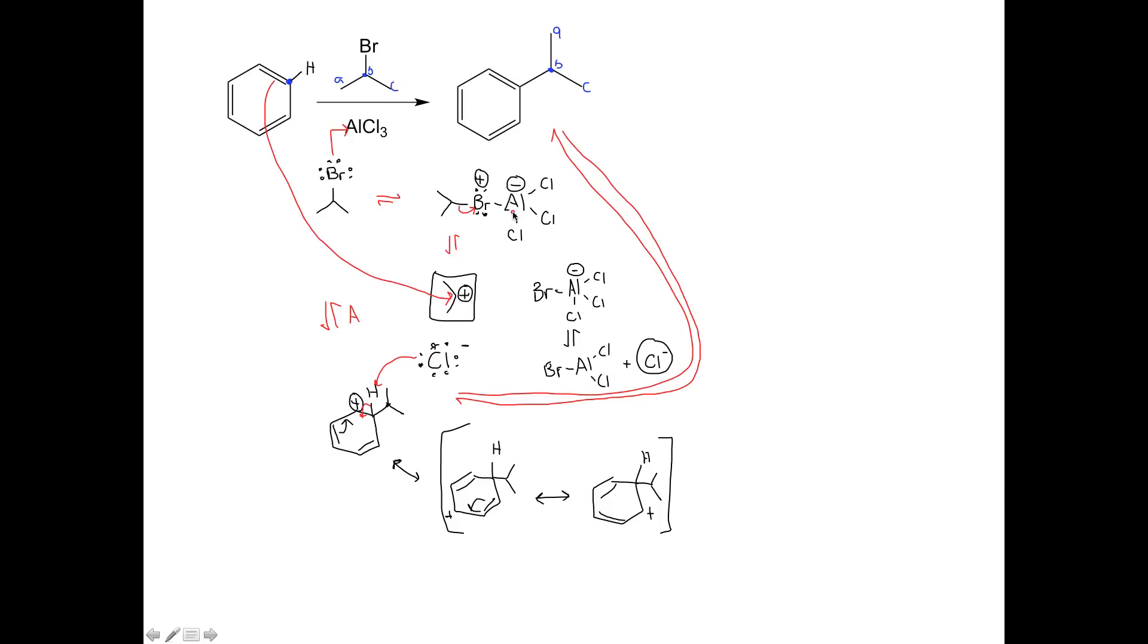So it's a pretty straightforward mechanism. Again, bromine attacks aluminum to form this species here. We break the carbon-bromine bond to generate our carbocation. This is now our electrophile. The aromatic ring will attack the electrophile to form this species. Two resonance structures we can draw. To complete the mechanism, Cl minus will abstract the hydrogen to reform my aromatic ring.